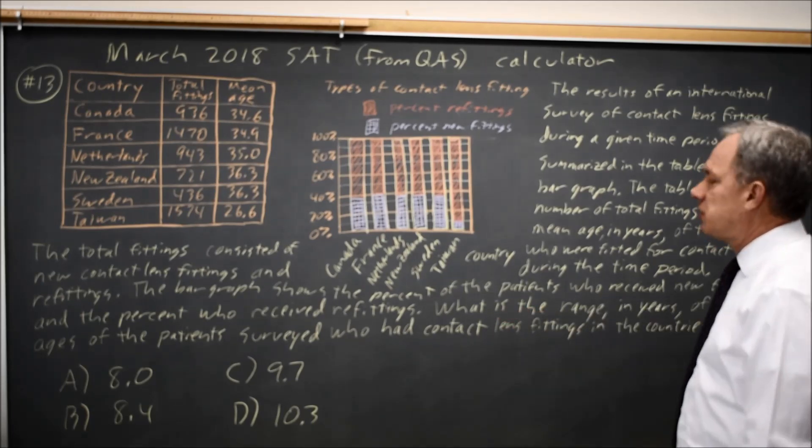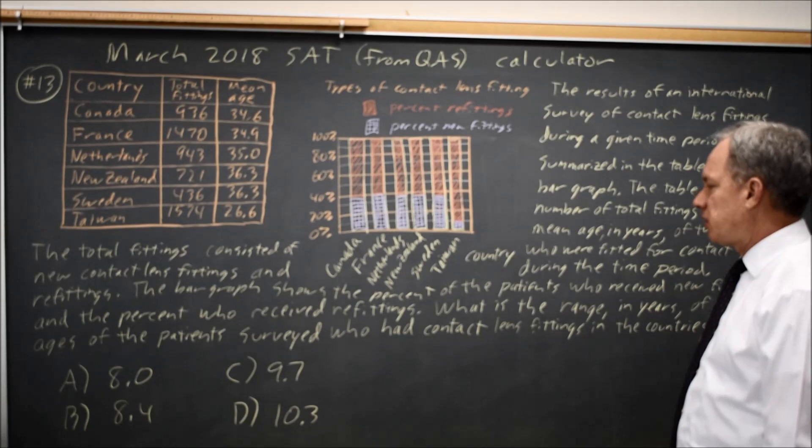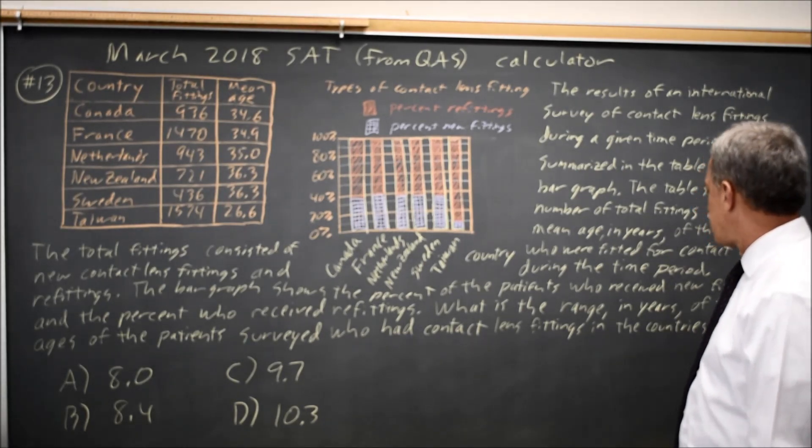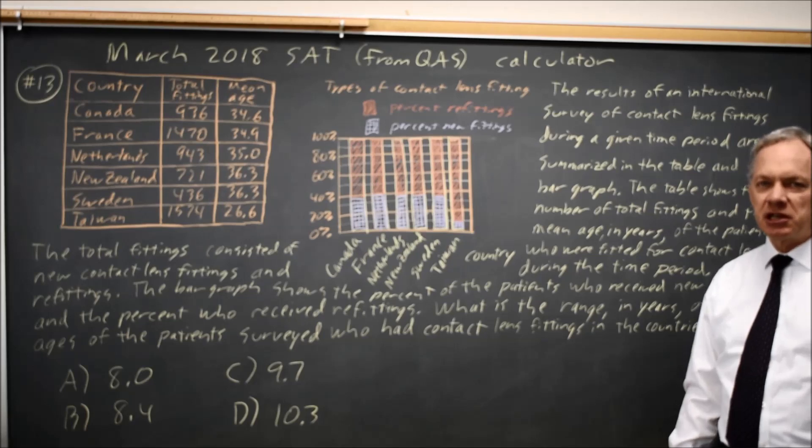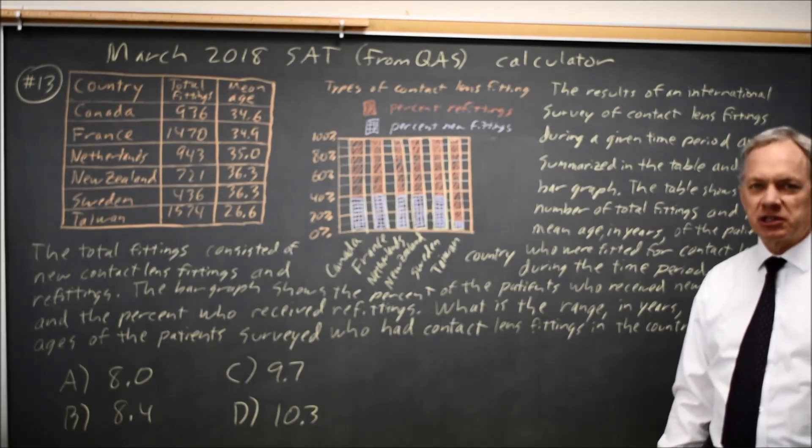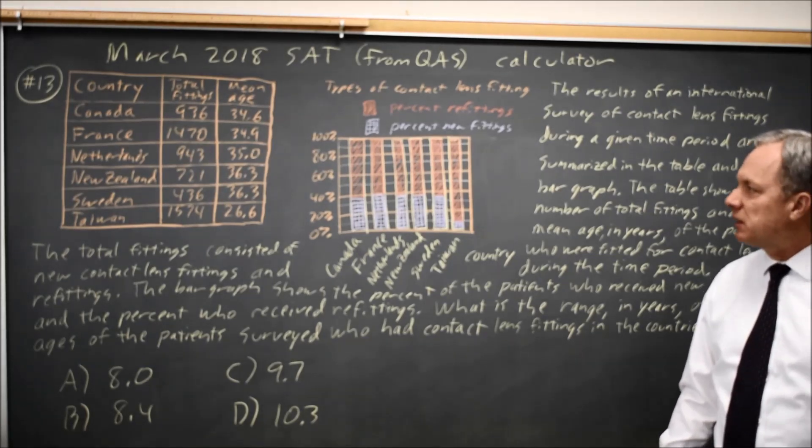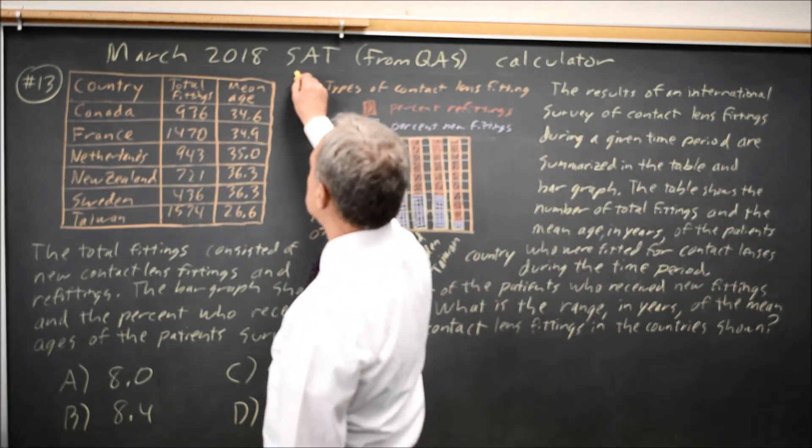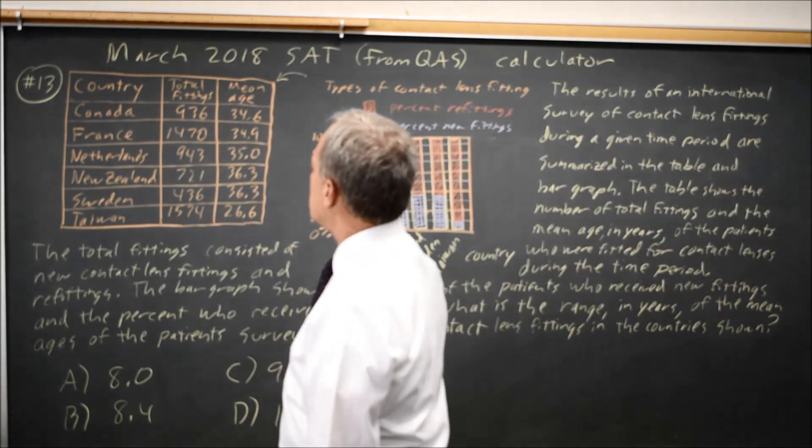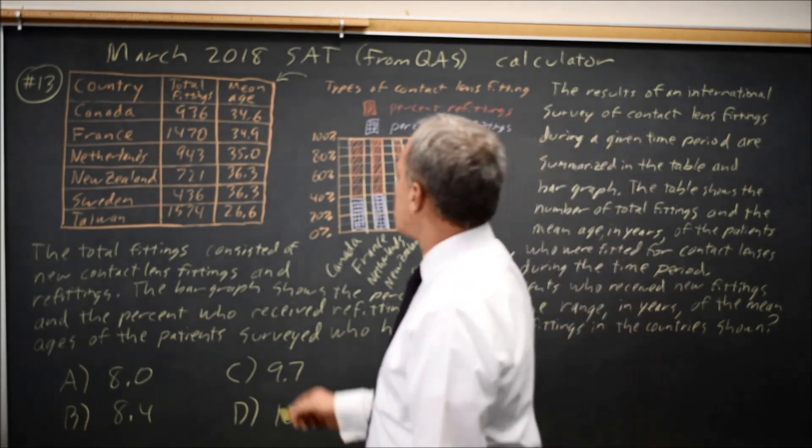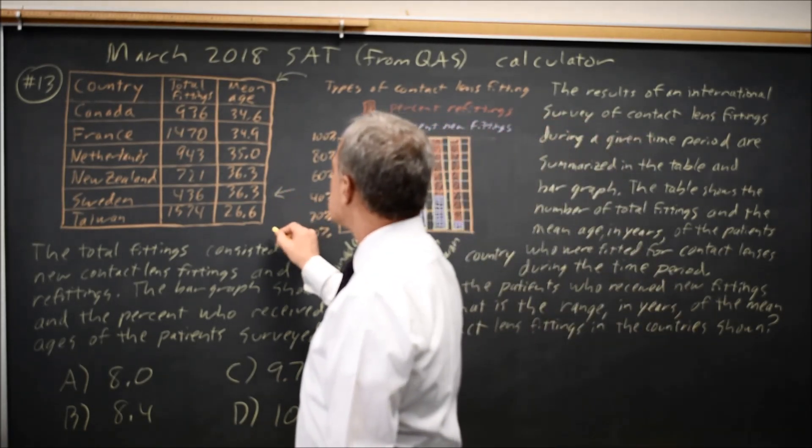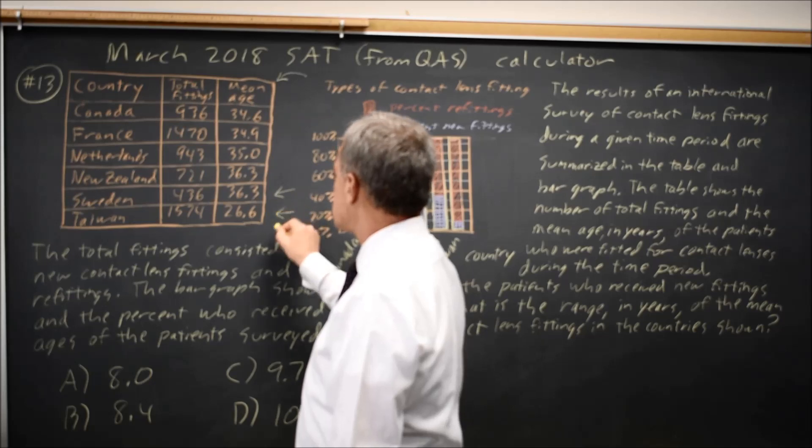What is the range in years of the mean ages of the patients surveyed who had contact lens fittings in the countries shown? It's important to read these questions carefully to make sure that you've identified the question the College Board is actually asking. They're asking about mean age which is this last column in the table that they provided, and we want to find the highest age 36.3 and the lowest 26.6.